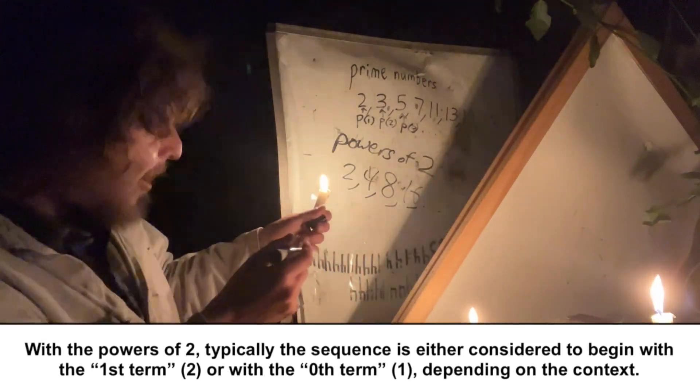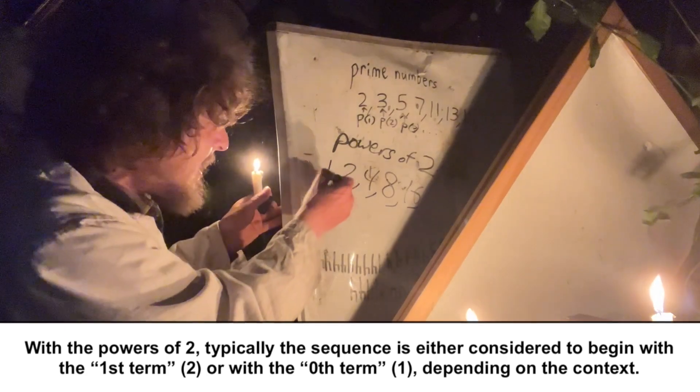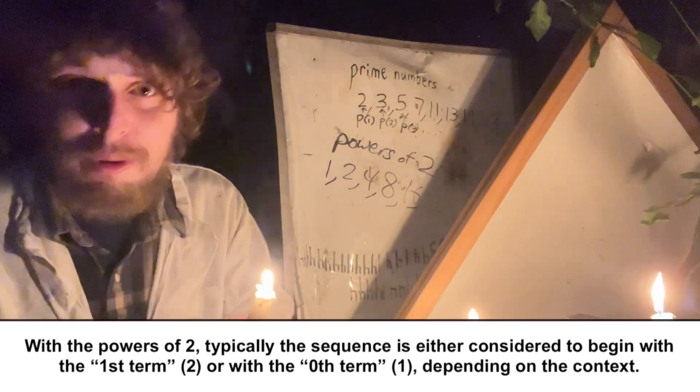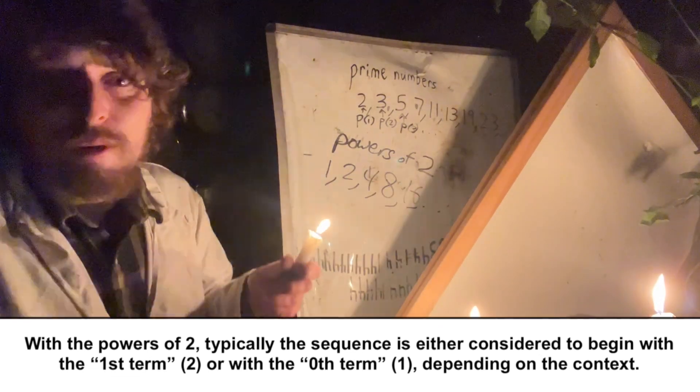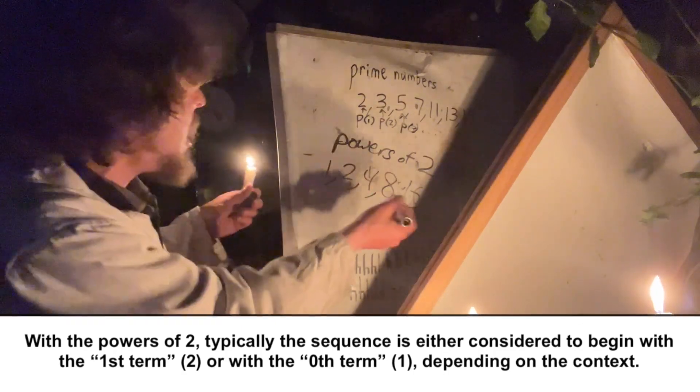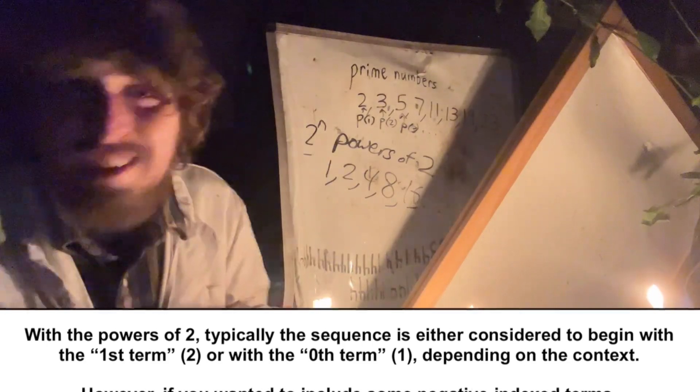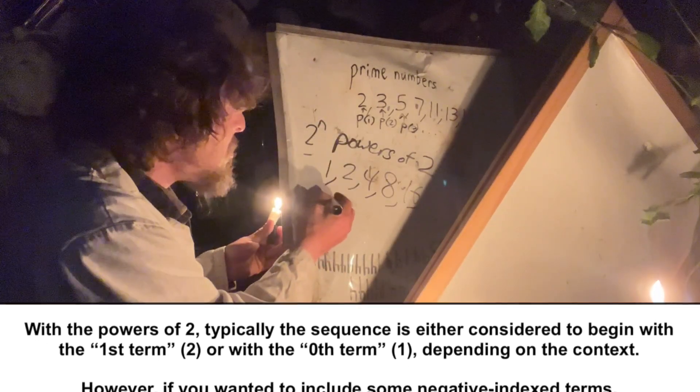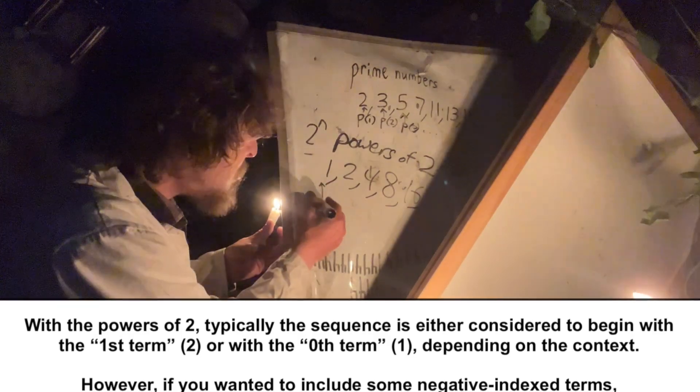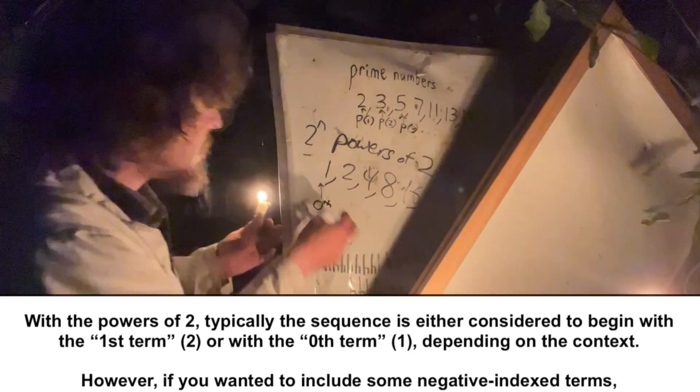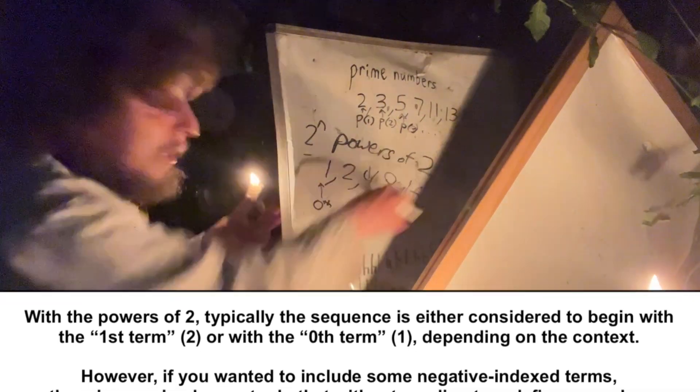But often, we want to include the zeroeth power of two, and since the powers of two are a straight-up formula, they are two to the power of some n.